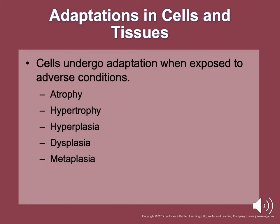Regarding cell adaptation when exposed to adverse conditions, cells go through a process of adaptation. Atrophy is decreasing the cell size due to a loss of subcellular components. Hypertrophy is increasing the cell size due to synthesis of subcellular components. Hyperplasia is increasing the actual number of cells in an organ or tissue. Dysplasia is an alteration of the size, shape, or organization of cells. Metaplasia is a reversible state of adaptation in which one adult cell type is replaced by another.